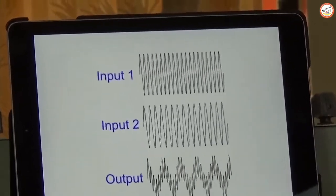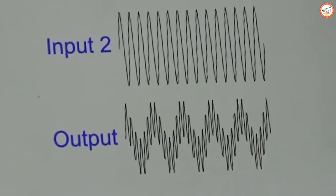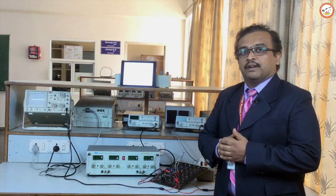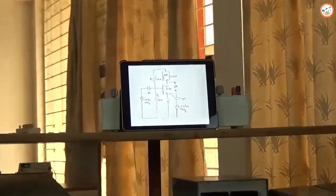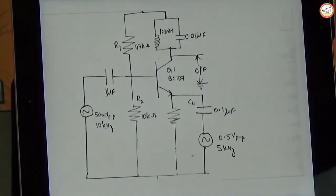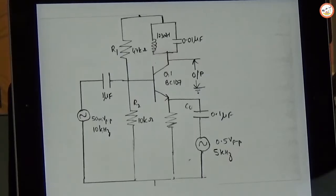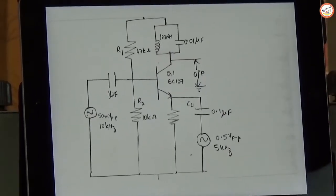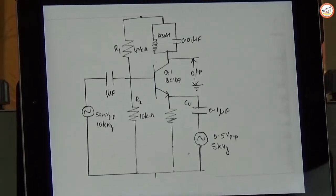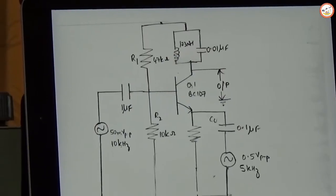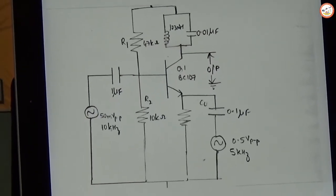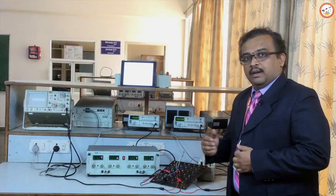The final output waveform will have the combination of all frequency components which are harmonic combinations of f1 and f2. Our aim is to design the BJT frequency mixer and observe the final output. In this experiment, the high frequency signal of 10 kHz is applied at the base terminal and the low frequency signal of 1 kHz is applied at the emitter terminal. The output will be either the sum or difference: 10 plus 1 = 11 kHz or 10 minus 1 = 9 kHz.